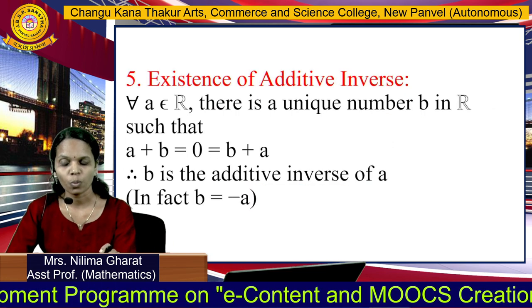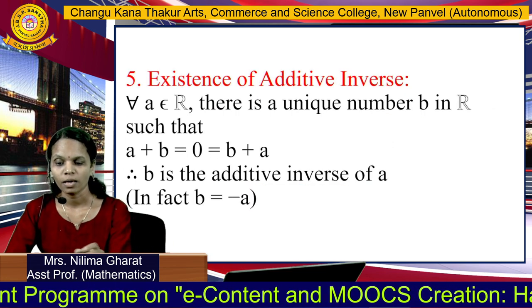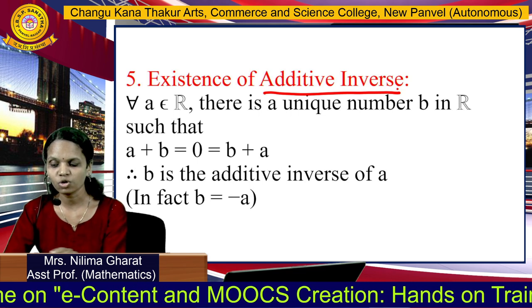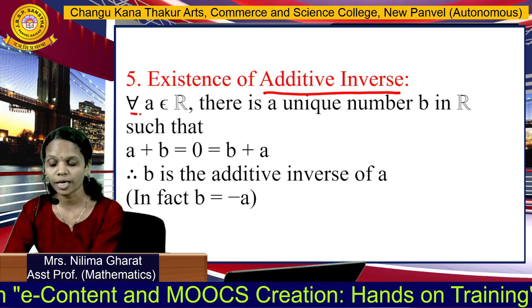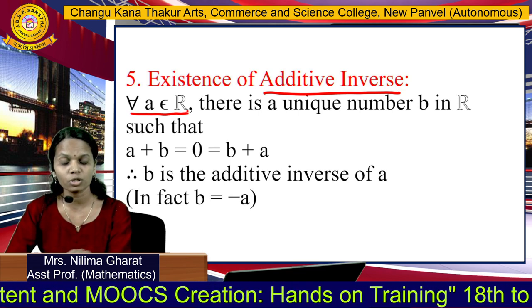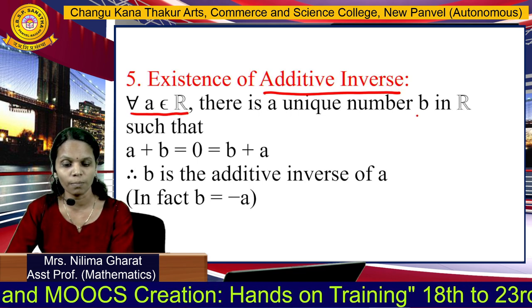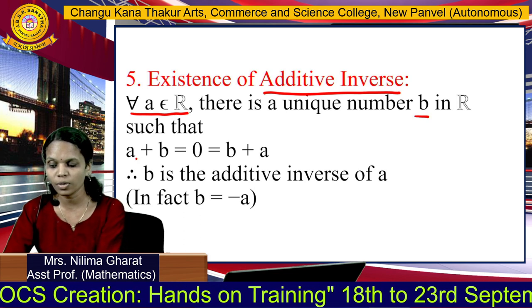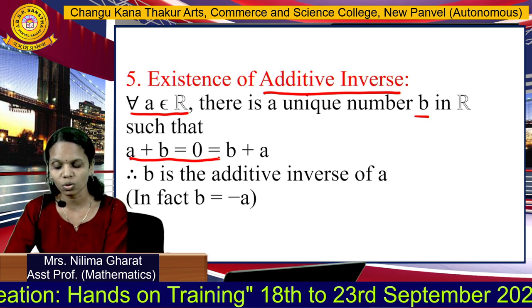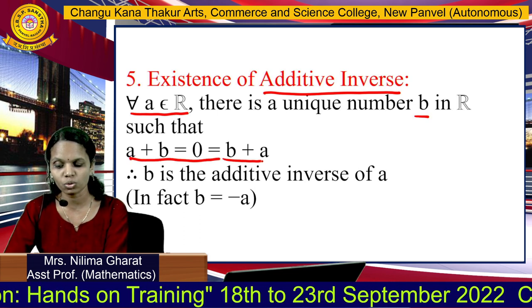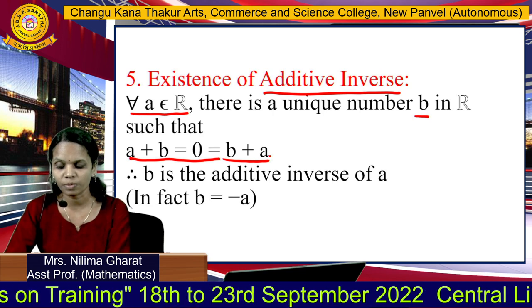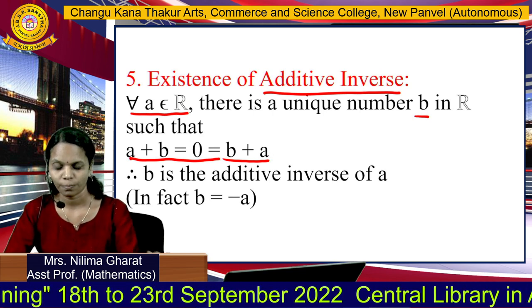The fifth property is the additive inverse. For any real number A, there is a unique real number B such that A plus B equals 0, which equals B plus A. That means B is the additive inverse of A.